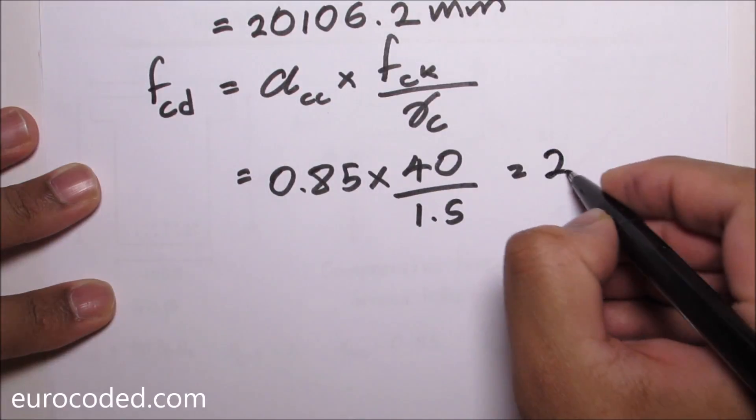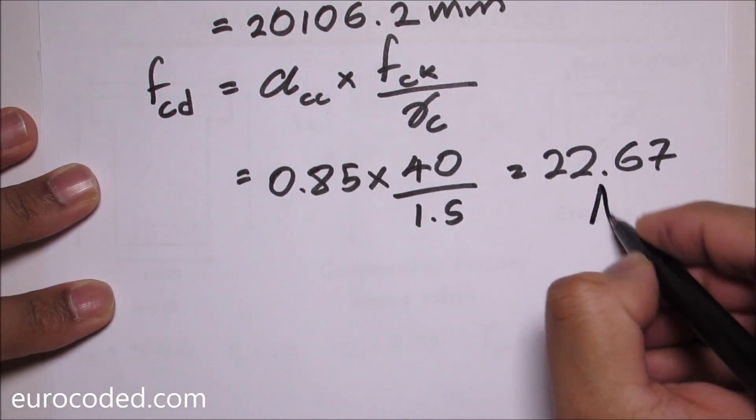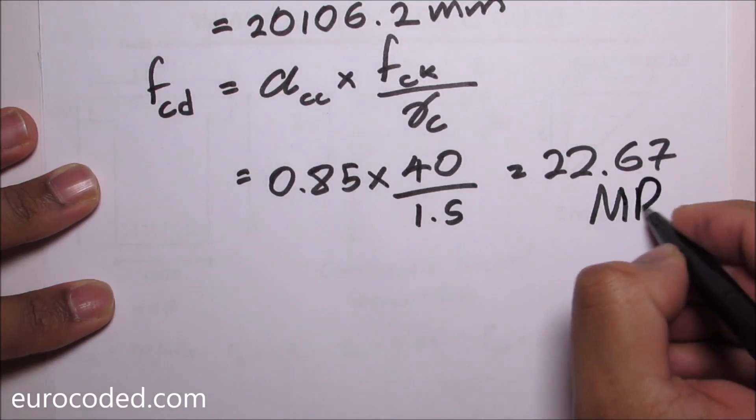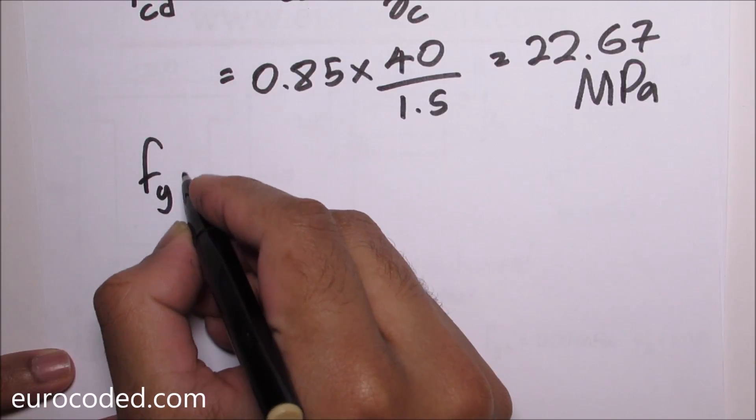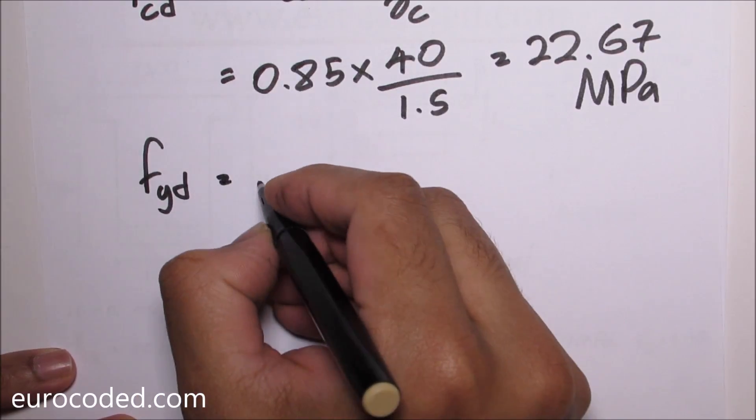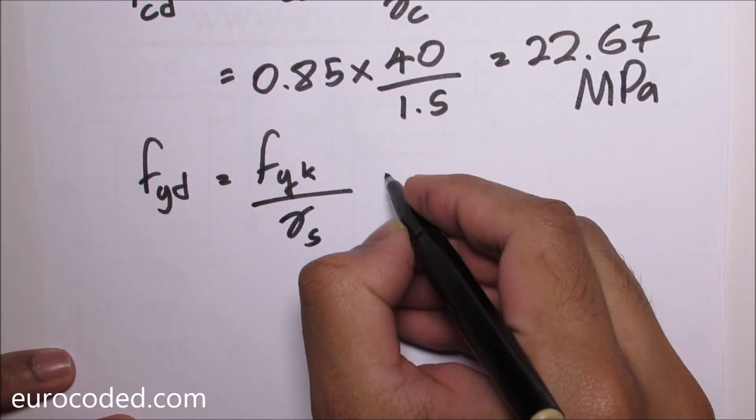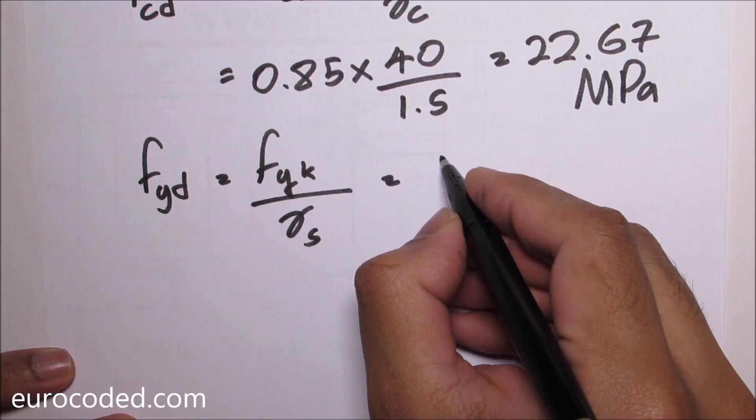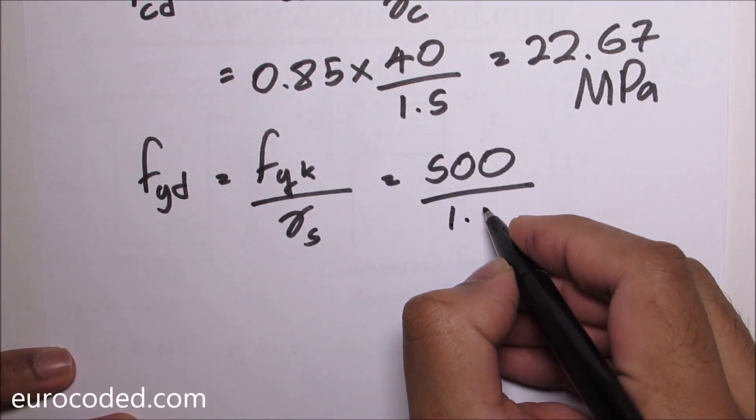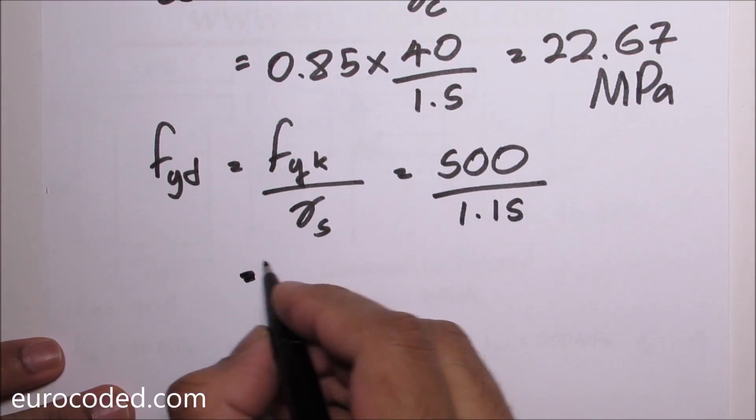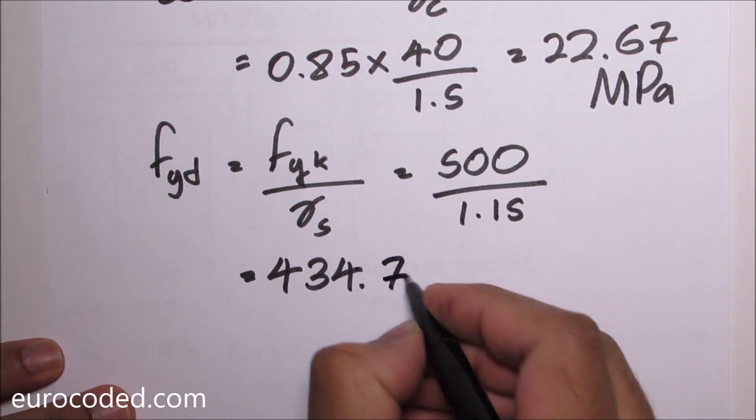We are going to calculate FYD for our reinforcement. This is FYK over gamma S, equal to 500 over 1.15. This is going to be 434.78.